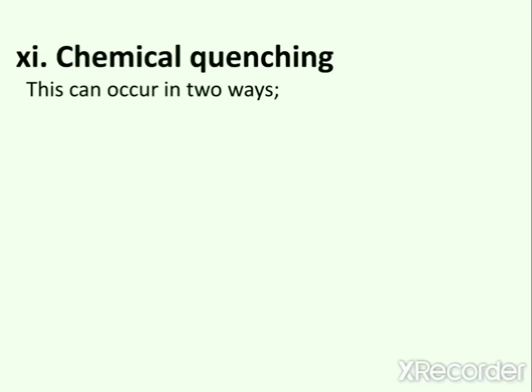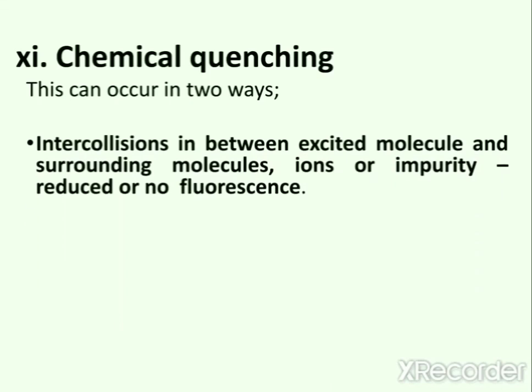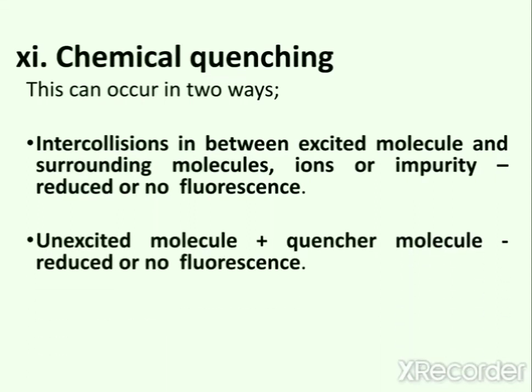The last factor is chemical quenching. Chemical quenching can occur in two ways. First, the excited molecule transfers its fluorescent energy to surrounding molecules, ions, or impurities by intercollisions, thereby destroying fluorescence. Second, the unexcited molecule may form a stable complex with a quencher molecule, inhibiting excitation and fluorescence.